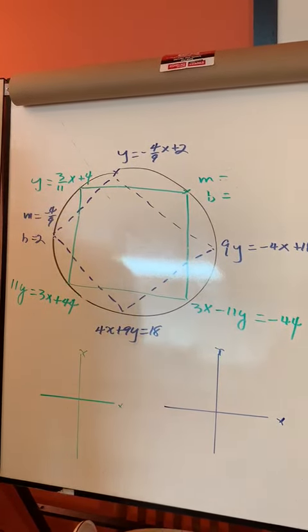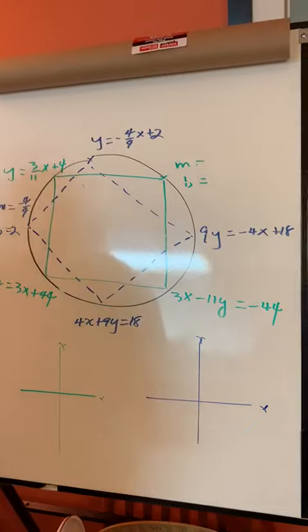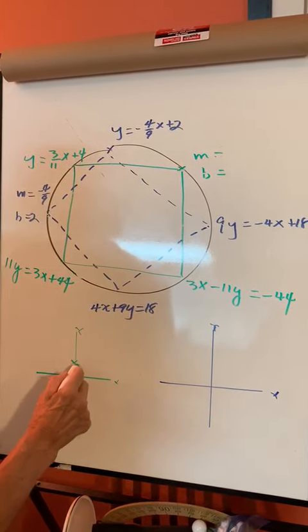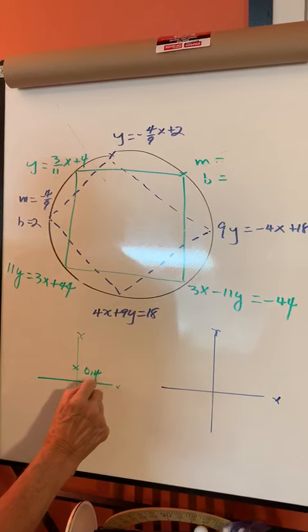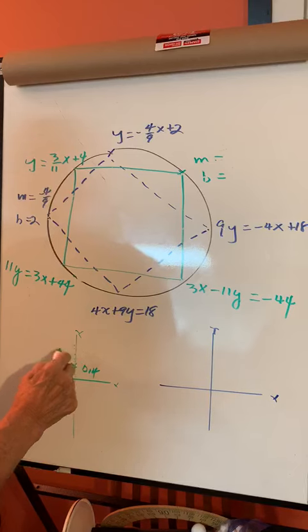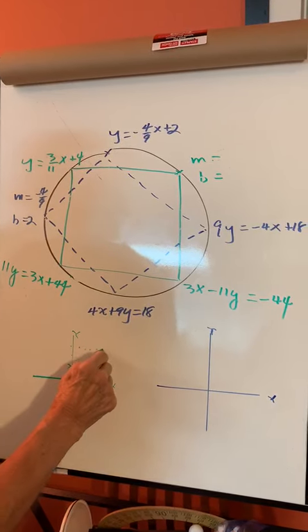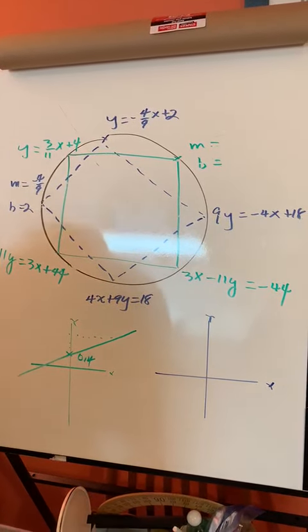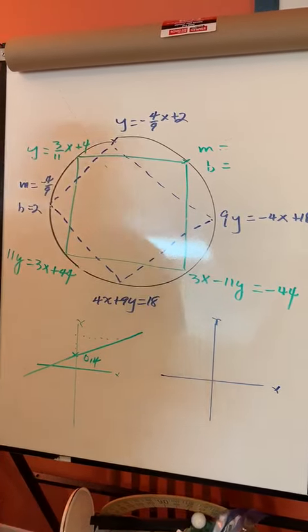Now let's go down to the bottom and sketch it. Over here, the green one goes through 4—this will be (0, 4), that's b. The slope is a rise of 3 and a run of 11: one, two, three. If you're way over here somewhere, it's gonna look like that. Let's do the other one.